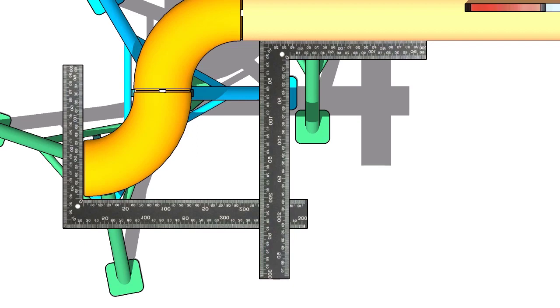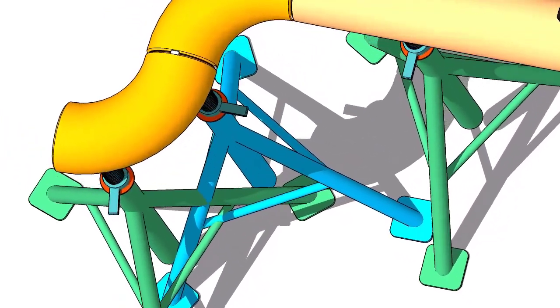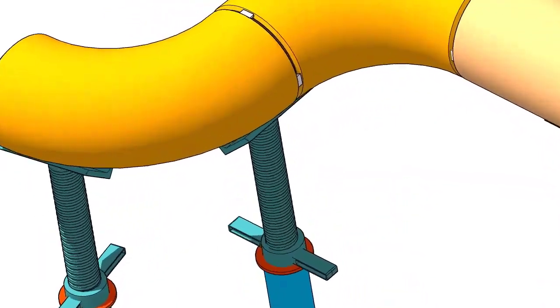Hold two right angles, one on the face of the elbow and one on the pipe side. Now use another right angle and check the squareness. Tack weld on both sides of the elbow.